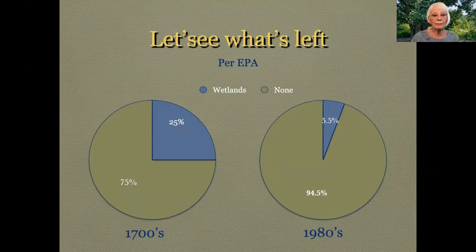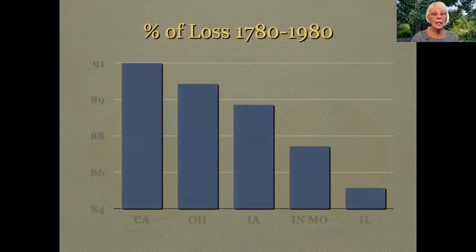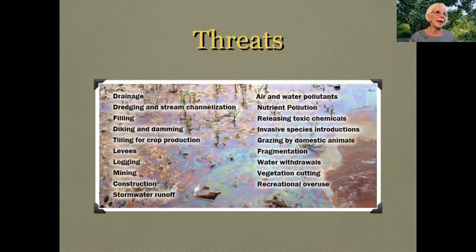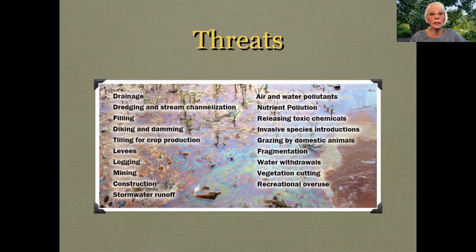Here in the United States, in the 1700s, we had 25% of our land mass covered with wetlands. Today, 5%. The state having lost most of its wetlands gets the crown — they've lost 91%. That's California. But we shouldn't gloat, because we're tied in fourth place with Missouri. Threats to wetlands include urbanization, growing crops, and many, many other threats.